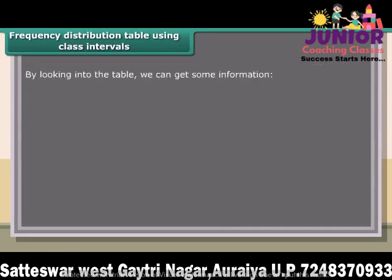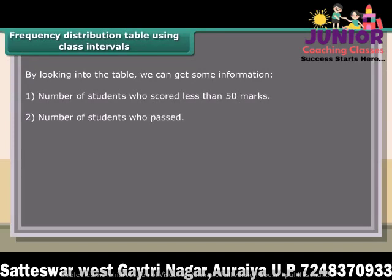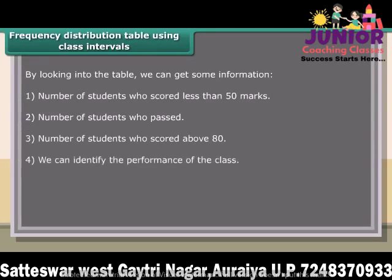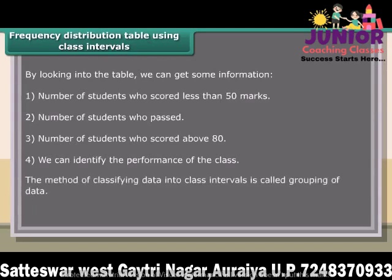By looking at the table, we can get some information: the number of students who scored less than 50 marks; the number of students who passed; the number of students who scored above 80; and we can identify the performance of the class. The method of classifying data into class intervals is called grouping of data.